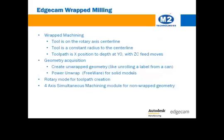C-axis wrapped milling creates a type of radial milling toolpath for lathes with live tooling. It is quite useful for turning centers that don't have Y-axis capability. In this type of application, the tool machines along the Z-axis and the rotary C-axis. The tool is normal to the part center line at Y-0, and machines at a constant distance to part center.